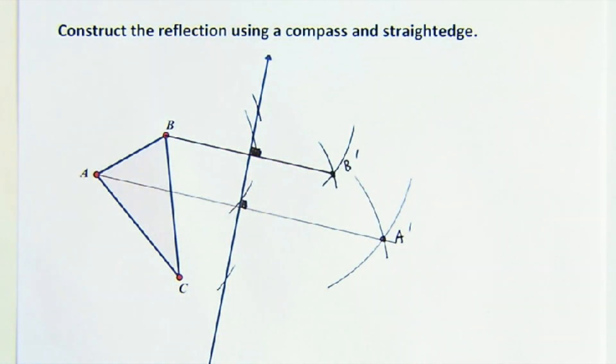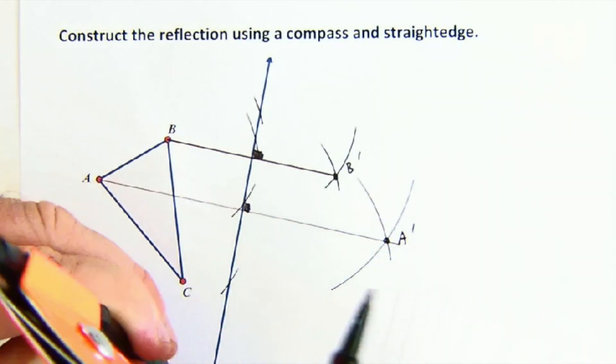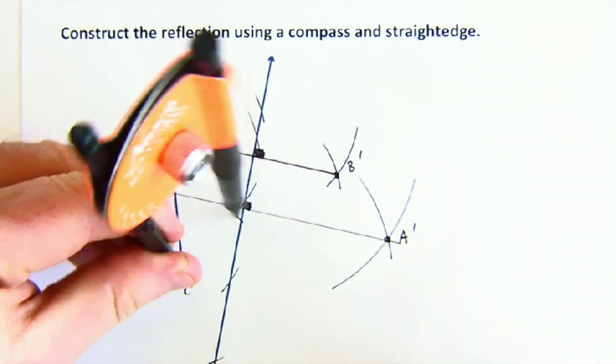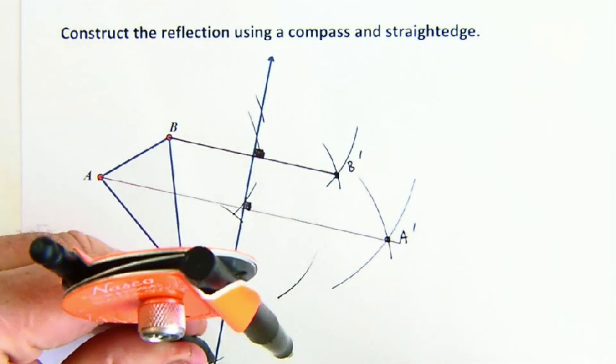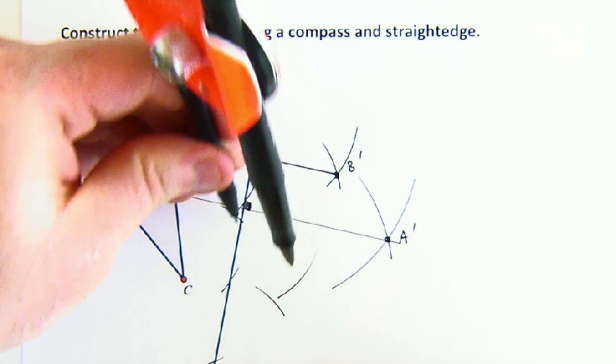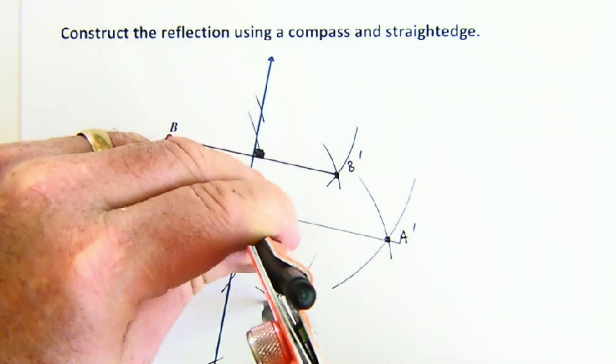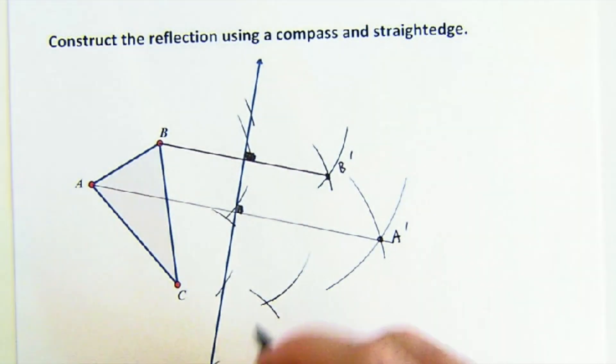Now, C is close enough that we can just shorten up our compass a little bit. Mark once, twice, and then from those two intersections, create our X. Whoop, didn't quite get enough arc there. And there is C prime.